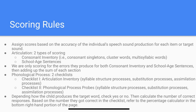For the phonological process section, there are two checklists. Checklist 1 consists of the articulation inventory, which includes syllable structure processes, substitution processes, and assimilation processes. Checklist 2 consists of the phonological process probes, which also covers the same categories. Depending on how the child produces the target word, you check yes or no, then calculate the number of correct responses at the bottom. Based on the number correct in each checklist, refer to the percentage calculator in the bottom right-hand portion of the page.